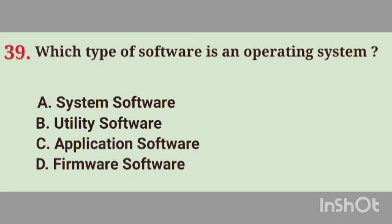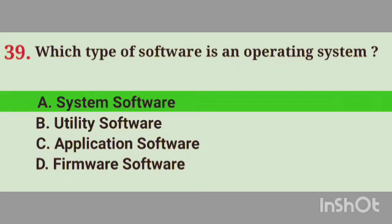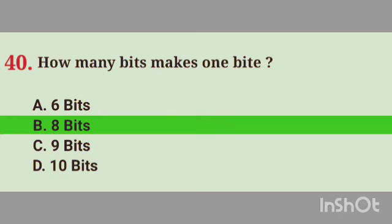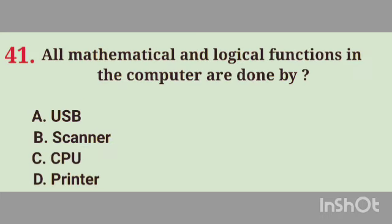Question No. 39. Which type of software is an operating system? Right answer, Option A. System software. Question No. 40. How many bits make one byte? Right answer, Option B. 8 bits.